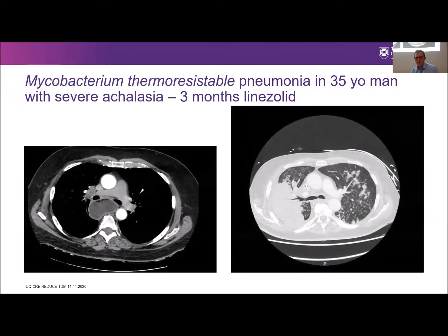A case from Adelaide involved Mycobacterium thermoresistible — a very exotic-sounding name, an infection I'd never heard of. The patient had a dilated oesophagus from achalasia causing chronic aspiration and was only a young man, spending about two months in ICU. He had been a soccer coach for his kids' team. It was a very severe infection, but he came through it. We suggested linezolid and used TDM in this case to try and get him over the line for the prolonged course he required.